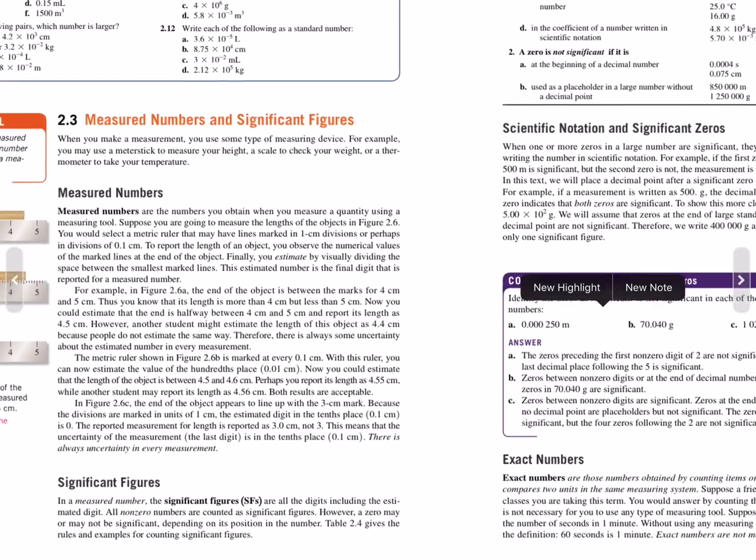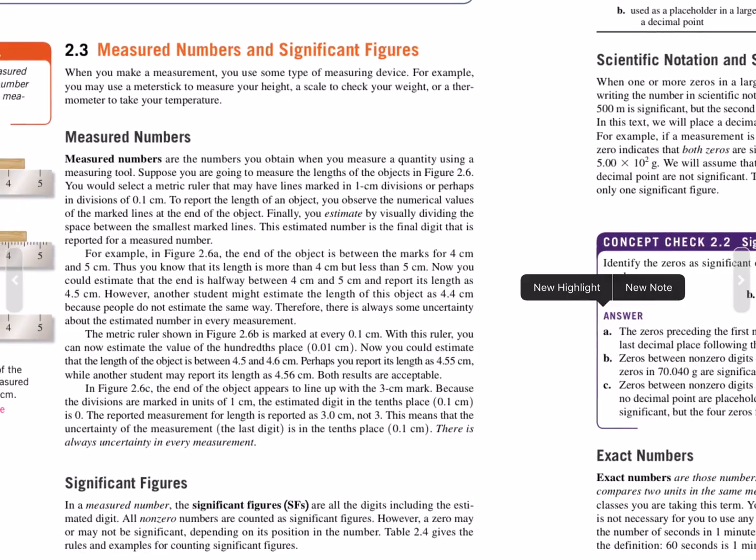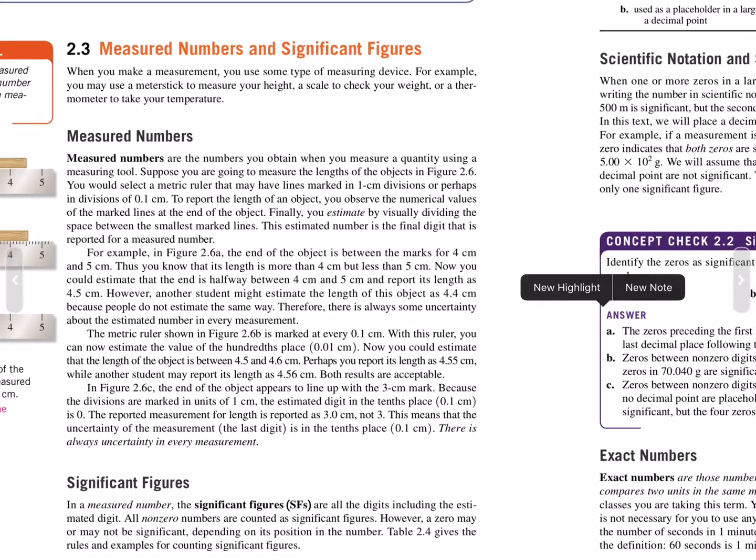Section 2.3, measured numbers and significant figures. When you make a measurement, you use some type of measuring device. For example, when you use a meter stick to measure your height, a scale to check your weight, or a thermometer to take your temperature.